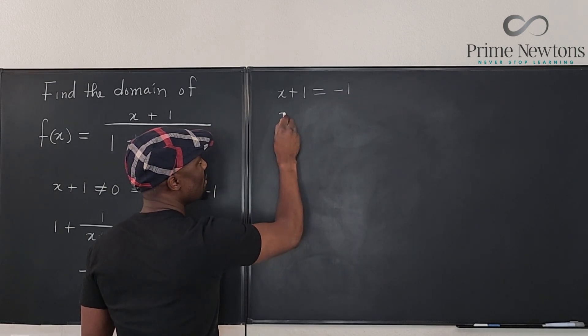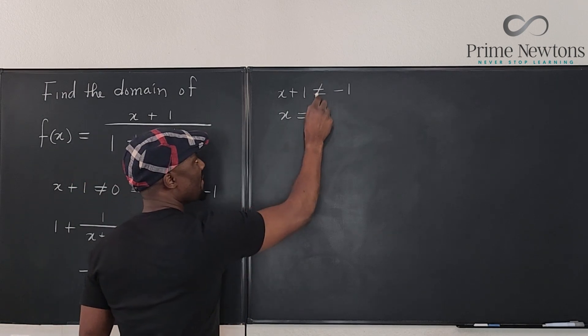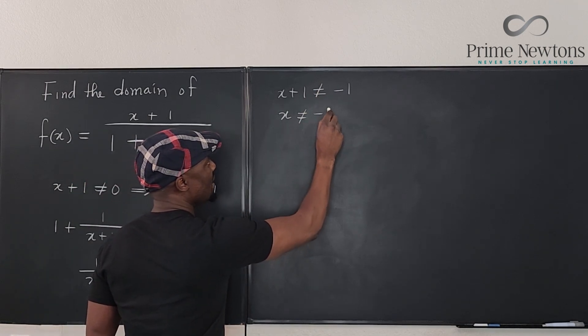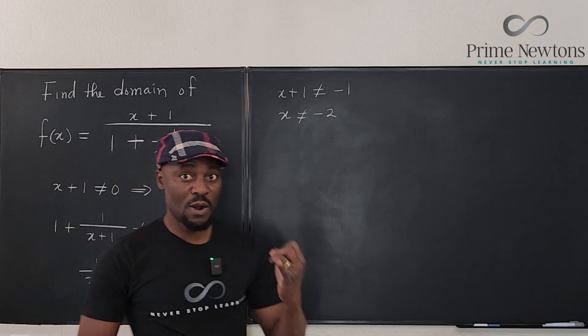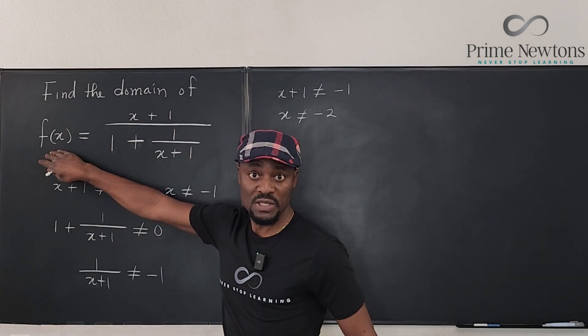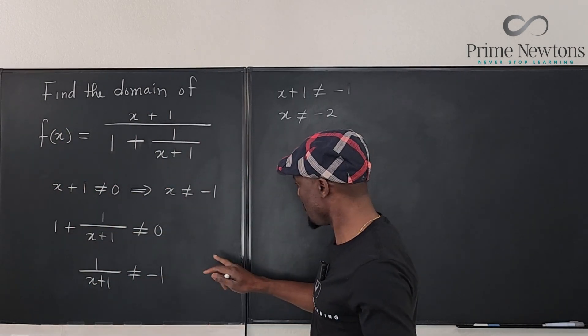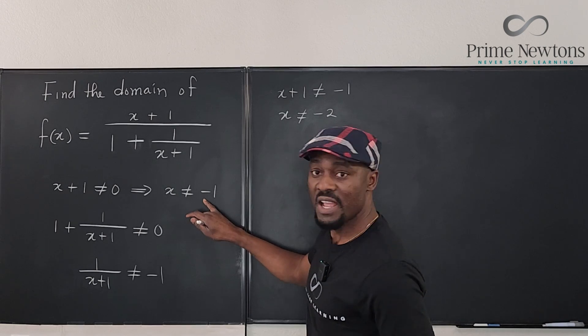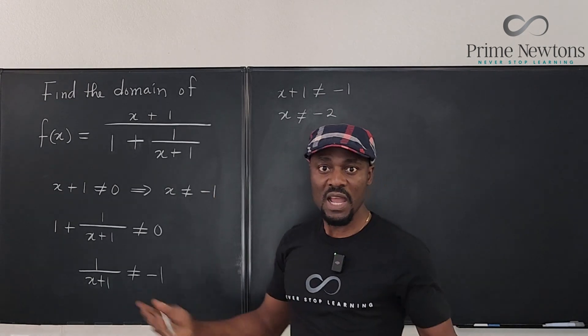Move this over. You have x, not equal to. x is not equal to minus 2. So now we know that for this function to exist, x cannot be minus 1, and x cannot be minus 2. And that's it.